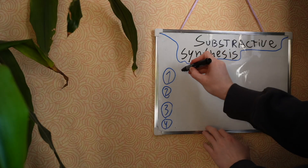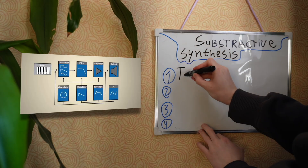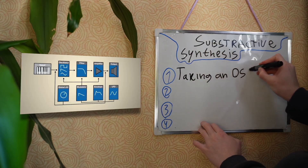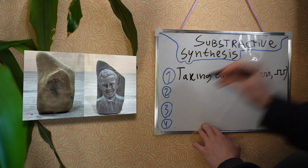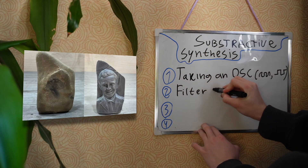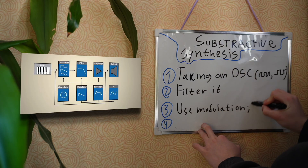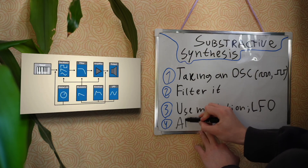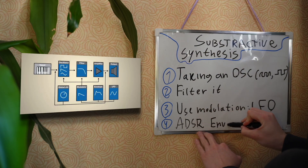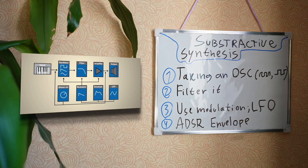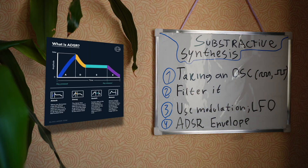Let me remind you that the subtractive engine works like a sculptor, taking an oscillator and polishing it with a filter, amplifier, and using modulators — LFO and ADSR envelopes.